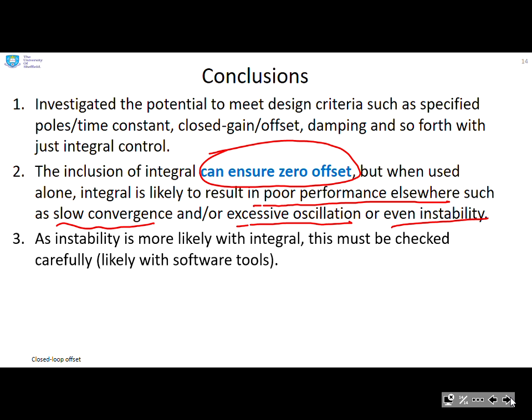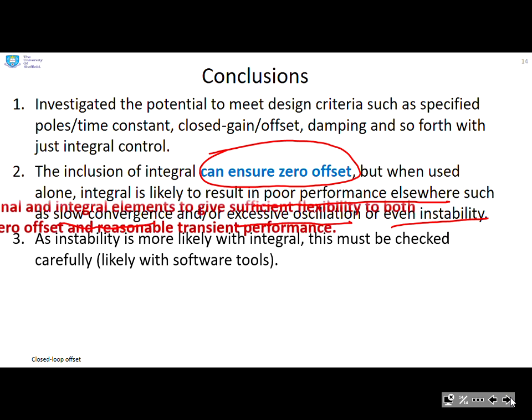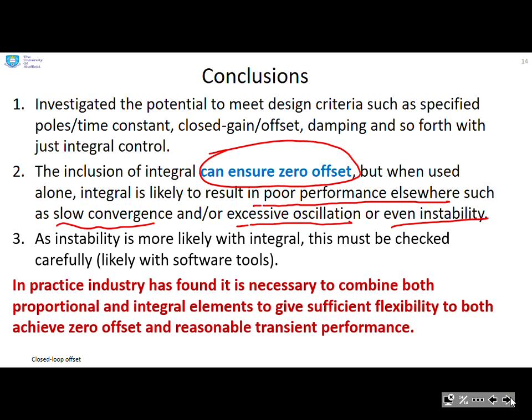As instability is more likely with integral, you've got to be really careful to check stability before you proceed with everything else. And the likelihood is you're going to have to use software tools. Now, in practice, industry has found it's necessary to combine both proportional and integral elements in the compensation to give sufficient flexibility to both achieve zero offset and reasonable transient performance. And that's what we'll look at next.